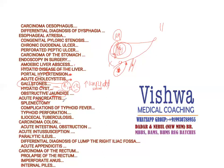Acute pancreatitis is usually a medical condition. The most common cause is chronic or acute alcoholism, and the patient presents with acute abdominal pain. There can also be increased serum amylase levels. Because it is a life-threatening condition, it needs to be treated urgently.